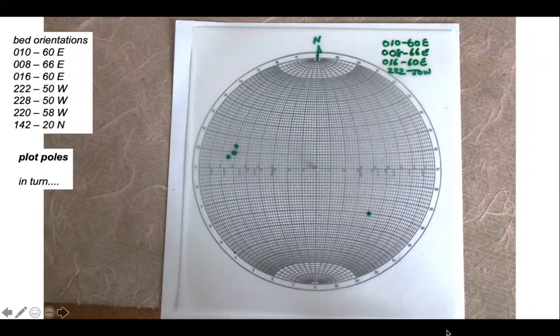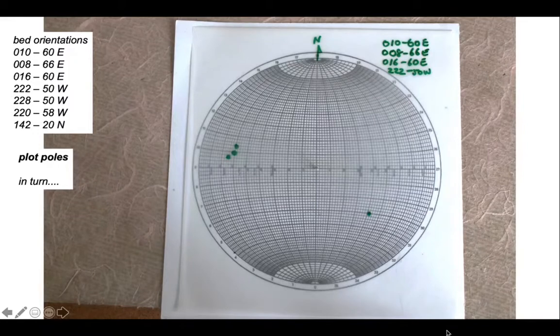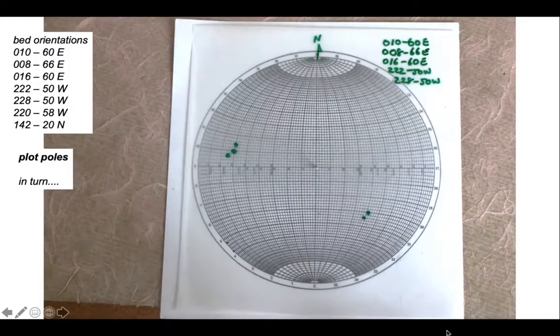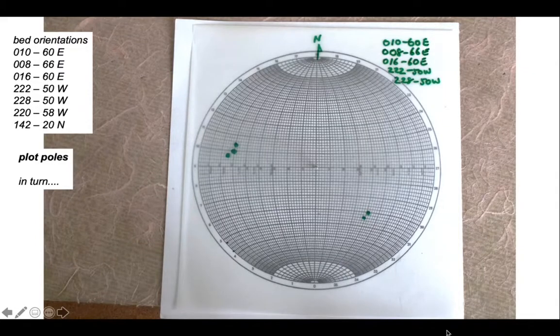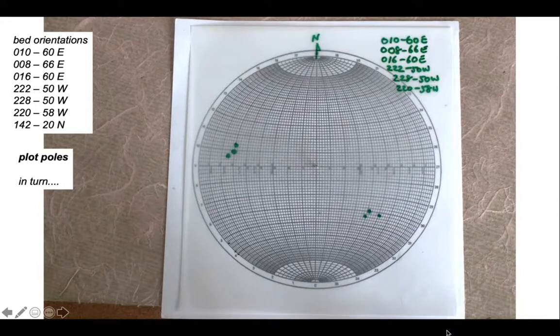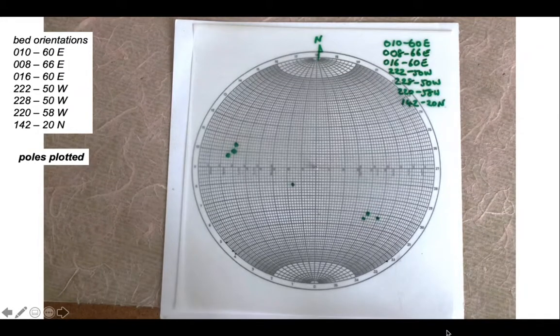Here's 222 50 west as the orientation of the bed, and its pole now is down there in the eastern quadrant. The next one: 228 50 west, again dipping west, so the pole sits over there on the eastern side. And this one here: 220 58 west, again the pole plunges off to the eastern side. Finally, 142 20 north, so the pole plunges down to the southern side.